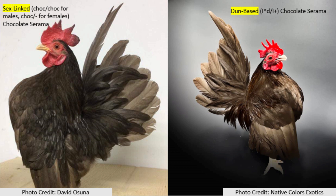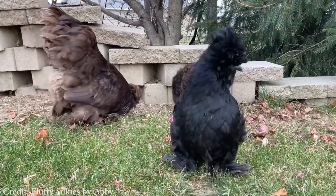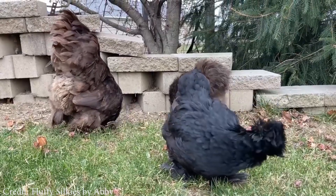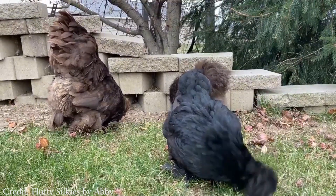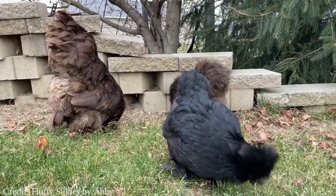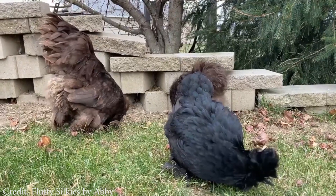Although visibly you usually cannot tell if a bird is Dunn-based chocolate or sex-linked chocolate, you can tell by the genotypic frequencies in the offspring. Sex-linked chocolate is a sex-linked recessive gene, meaning breeding two chocolates together will give you 100% chocolate offspring. This is not the case with the Dunn gene.